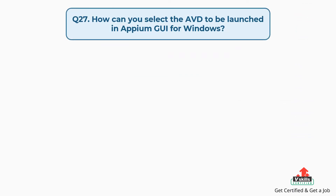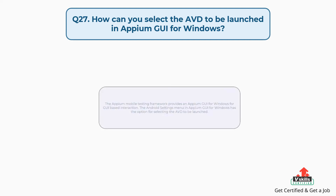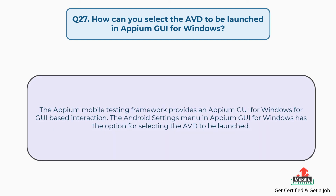Question number 27: How can you select the AVD to be launched in Appium GUI for Windows? The Appium Mobile Testing Framework provides an Appium GUI for Windows for GUI-based interaction. The Android Settings menu in Appium GUI for Windows has the option for selecting the AVD to be launched.